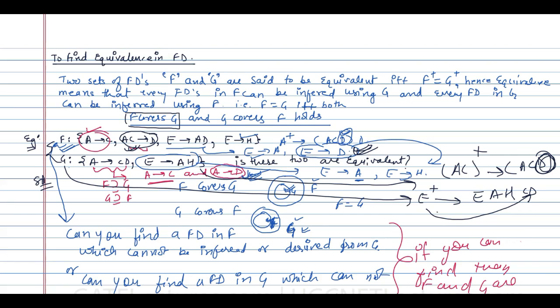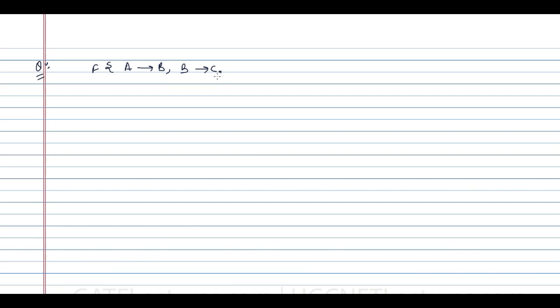Let us take a few more examples. Assume F is A→B, B→C, C→D and G is A→BC, C→D. We want to identify whether F is equivalent to G or not. First, try to identify if there is anything present in F but not in G, or anything present in G but not in F.